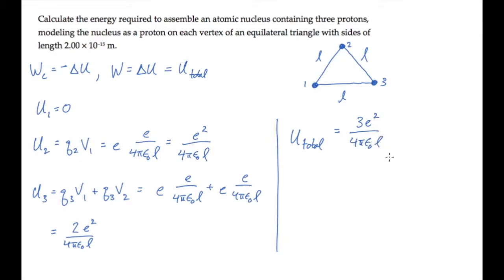We know the value of 1 over 4πε₀, and the value of the fundamental charge e. We're told what the separation L is between the charges, so when we substitute all of these and calculate, we find that the energy required to assemble the nucleus is 3.46 times 10 to the minus 13 joules.